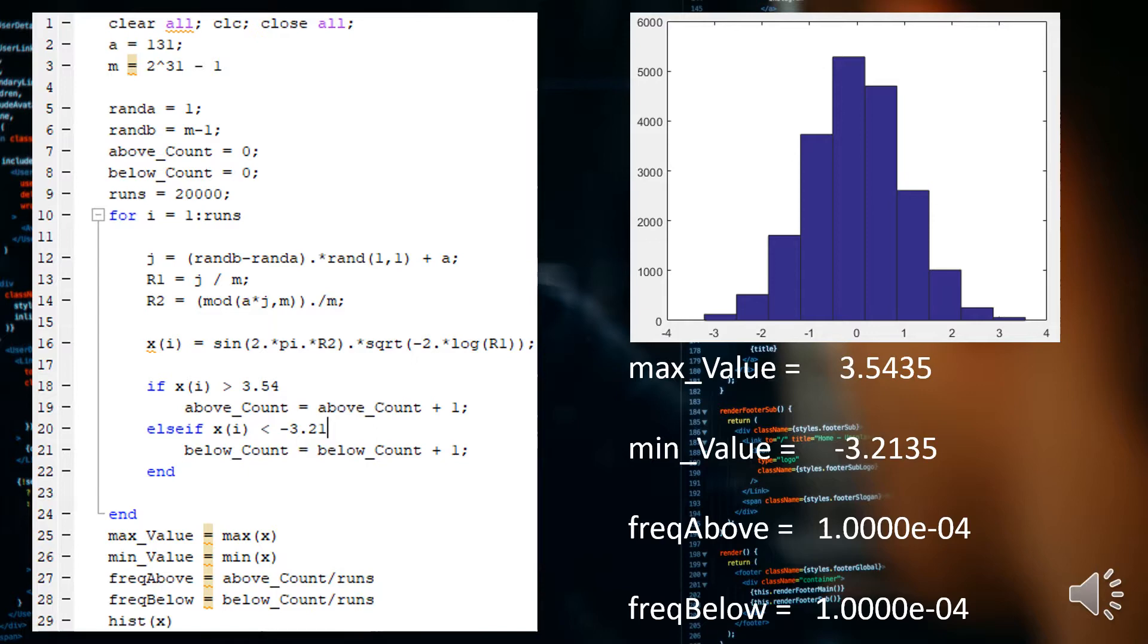At the end, for frequency above and below, we capture a ratio of the number of count that it goes above divided by the total number of runs, and the same for the below count. What we find is that it's a very small number of times that a random number for that sine function will at all come close to going above or below for the random values.